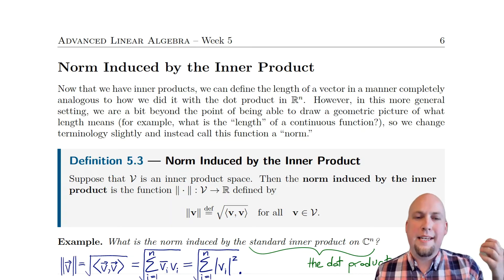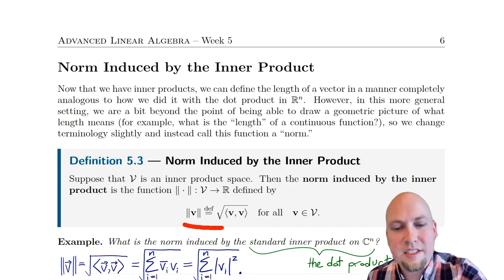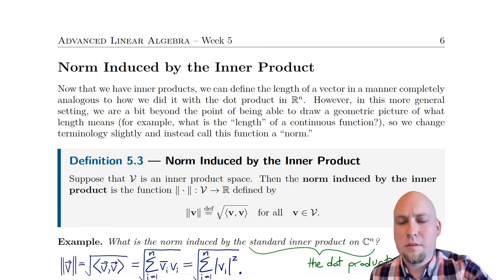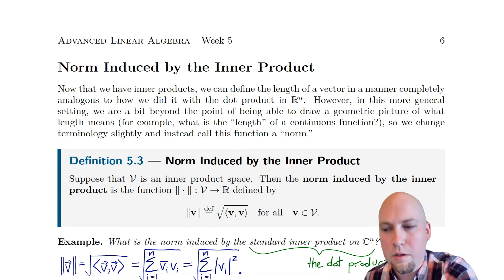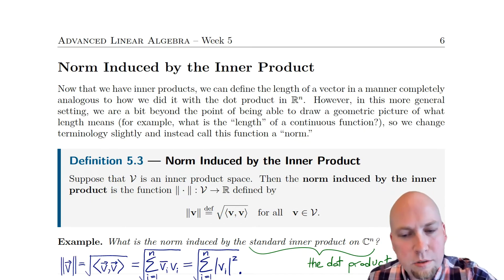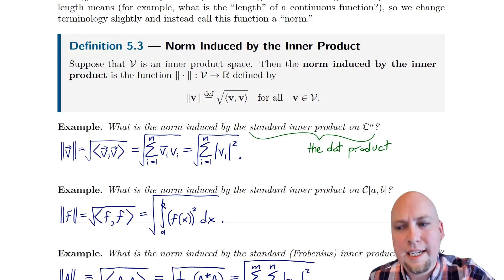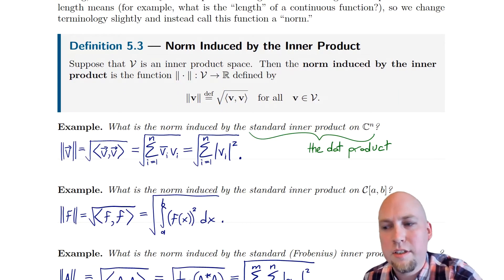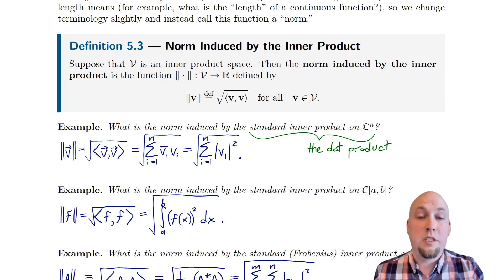It's defined as the function you get if you take the inner product of the vector with itself and then square root at the end of the day. This function measures how large a vector is. Let's go through a couple quick examples to get a bit of intuition for how norms induced by inner products work.